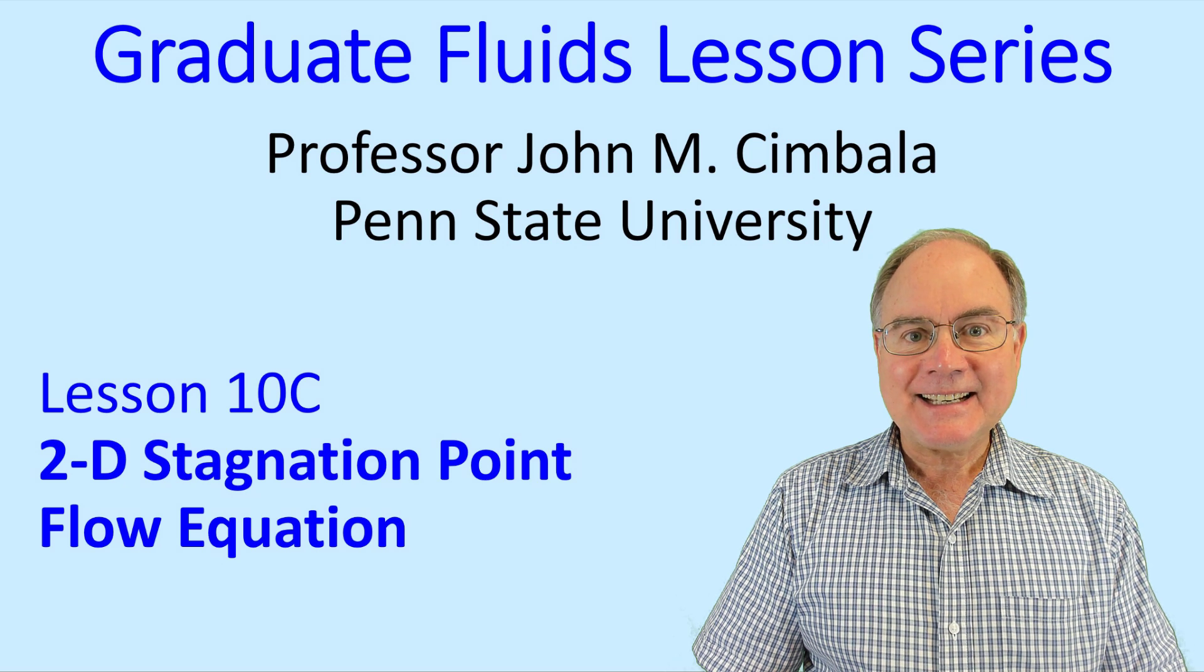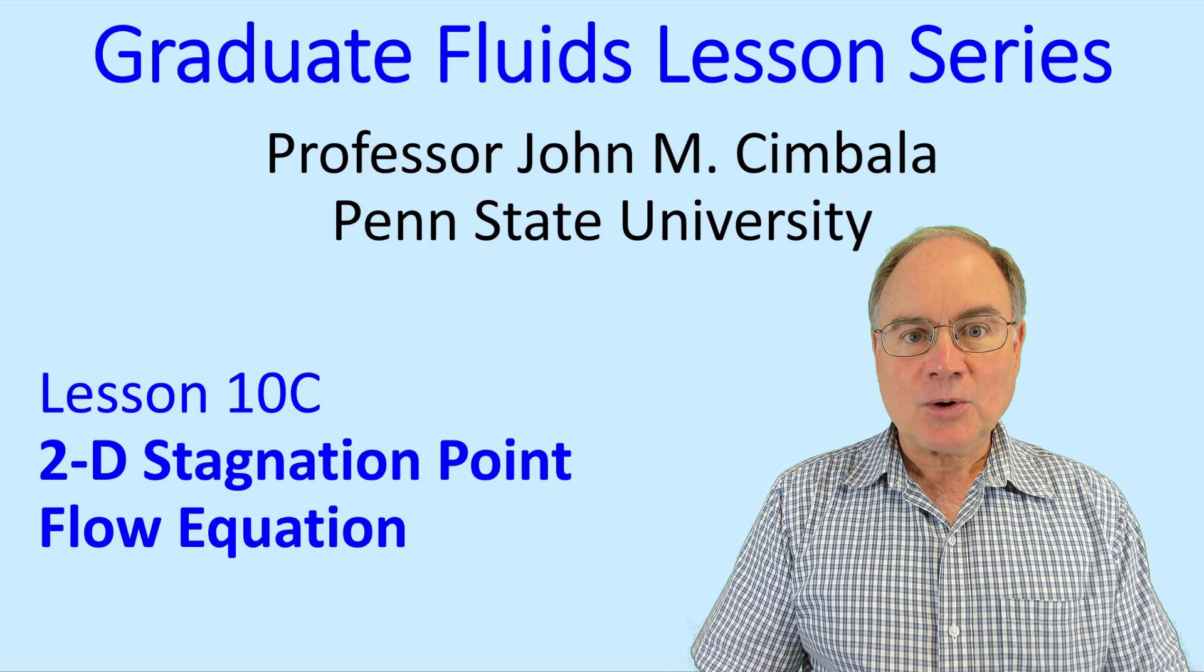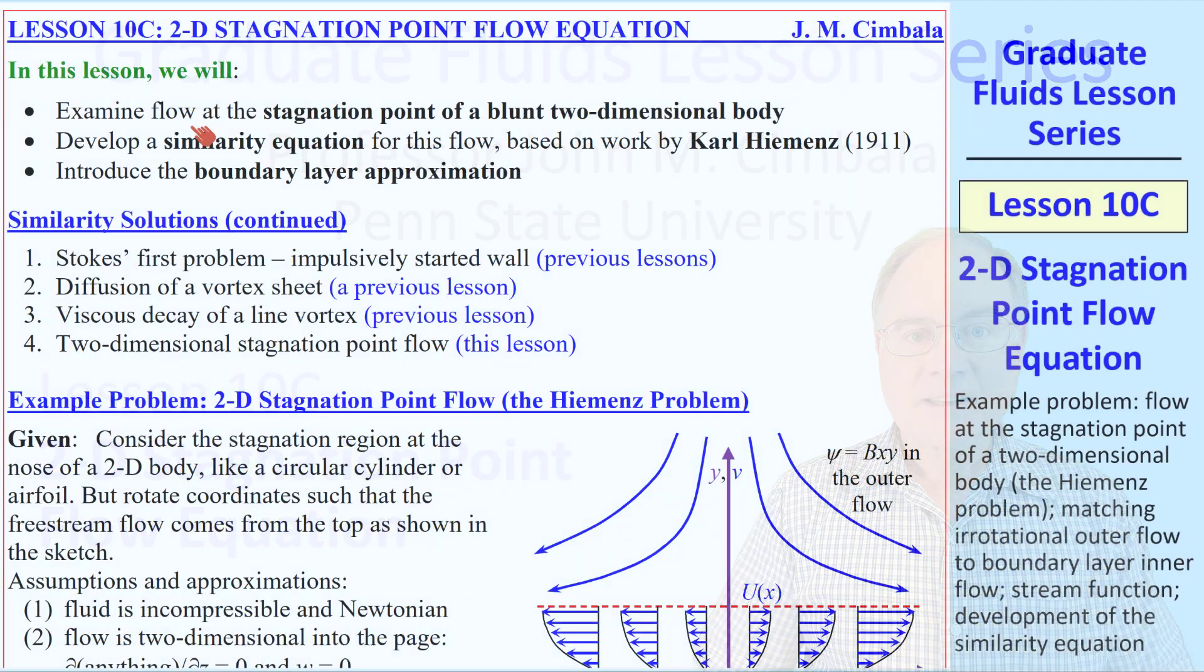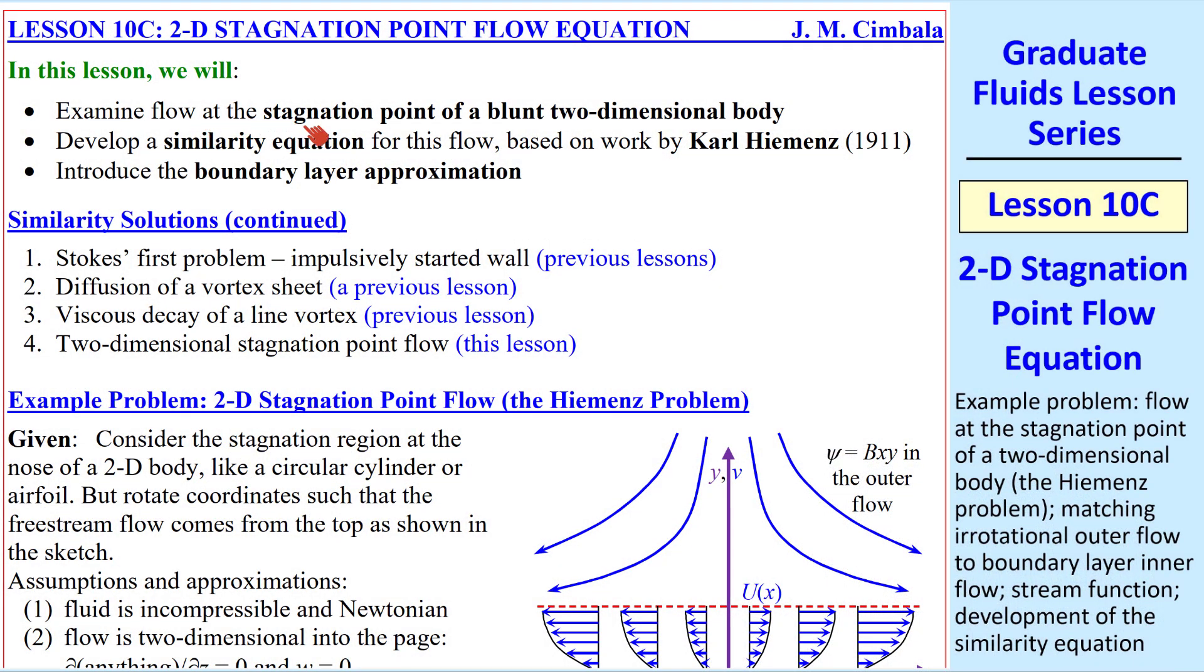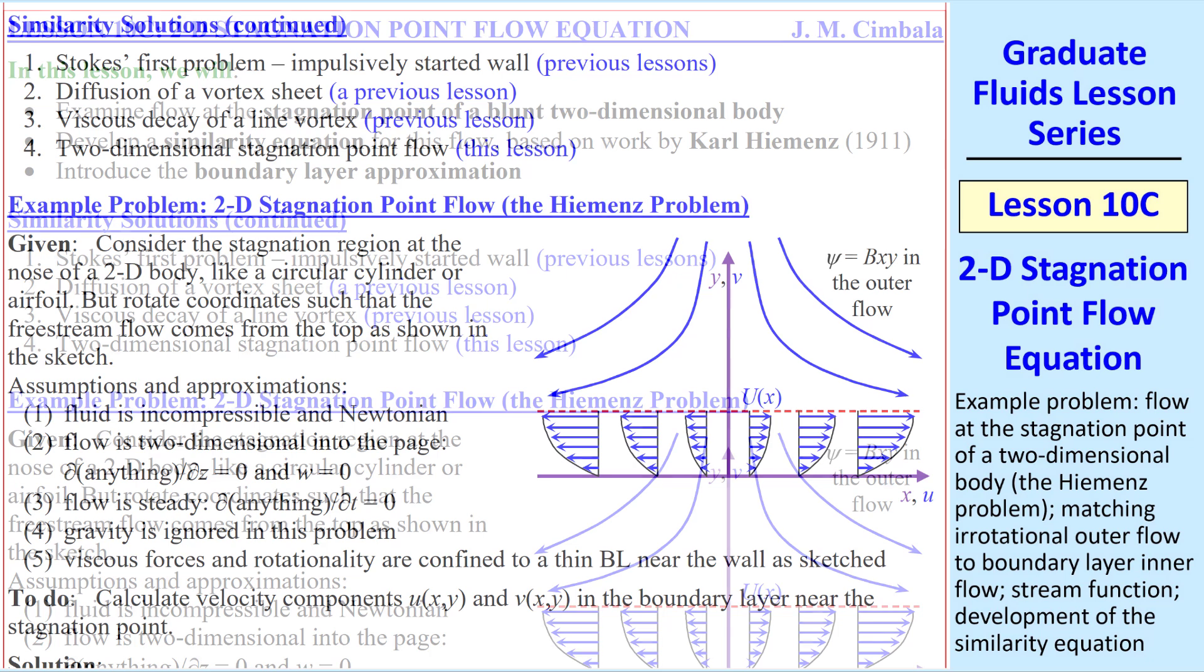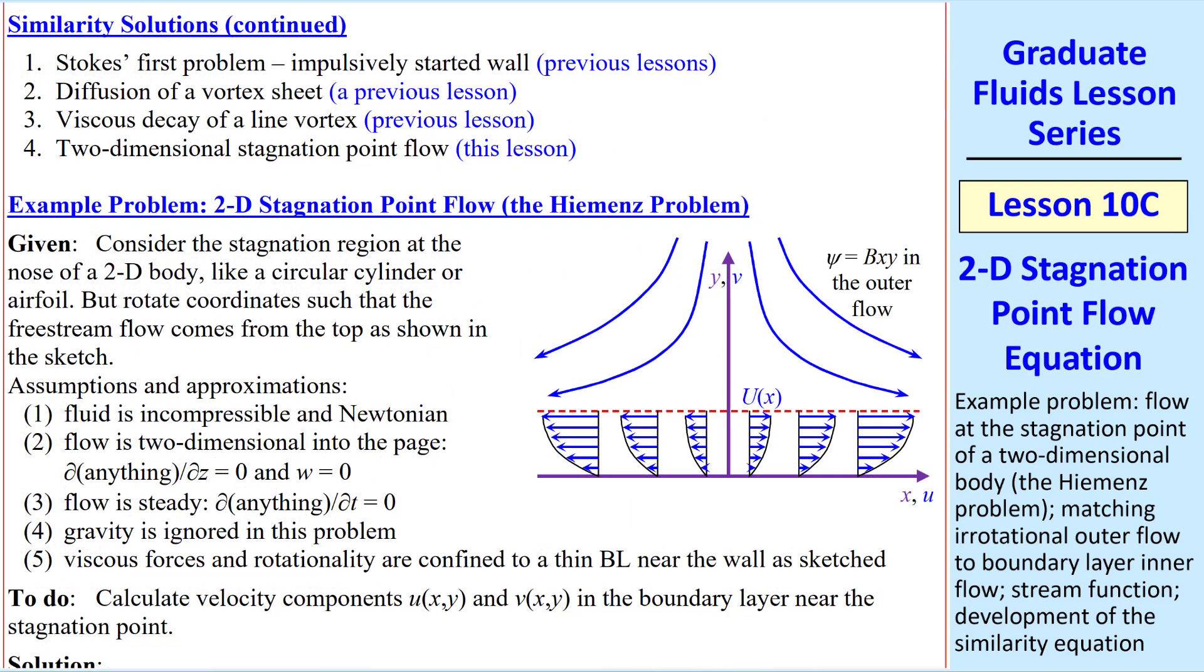Welcome to lesson 10c, 2D stagnation point flow equation. In this lesson we'll examine flow at the stagnation point of a blunt 2D body. We'll be able to derive a similarity equation based on work by Carl Hiemenz and in the process introduce the boundary layer approximation. In this lesson we'll develop the equation and we'll solve it in the following lesson. As a quick review, this will be the fourth similarity solution that we discuss.